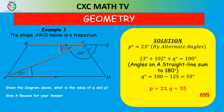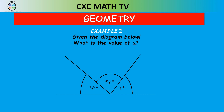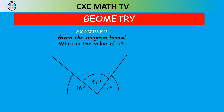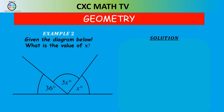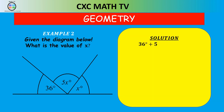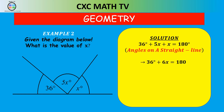Example two: given the diagram, find the value of x. That's a straight line, so angles on a straight line are supplementary: 36 plus 5x plus x equals 180. Simplifying, 36 plus 6x equals 180, so 6x equals 144. Dividing both sides by 6, x equals 24 degrees.